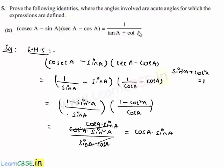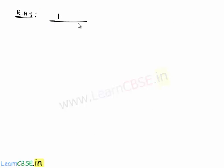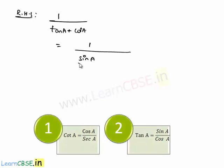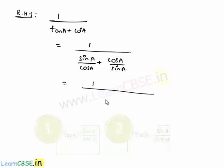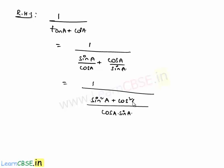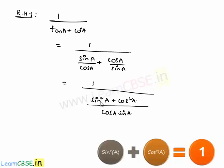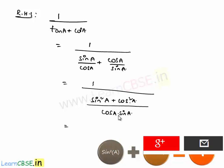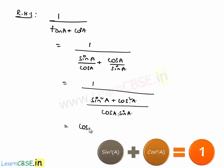Let us also find the simplified form of the right hand side: 1 by tan a plus cot a. Tan a can be written as sin a by cos a and cot a can be written as cos a by sin a. Taking LCM as cos a into sin a, we get sin squared a plus cos squared a in the numerator. Since sin squared a plus cos squared a equals 1, the denominator becomes cos a into sin a, giving us cos a into sin a.